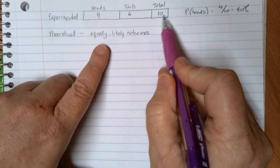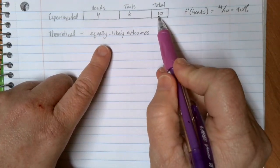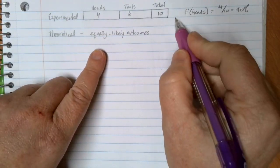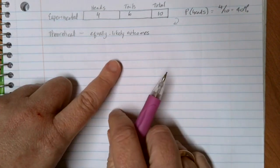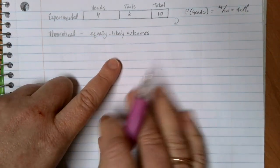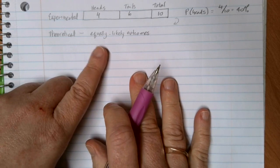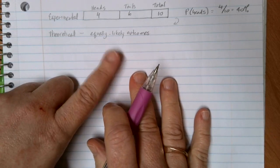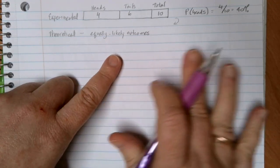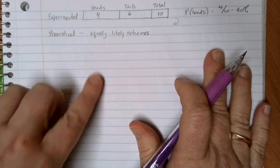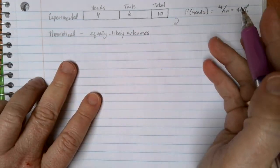The truth is, is that the more of these trials, the more of these experiments that you do, the closer and closer that you end up getting to this theoretical probability. And so if we're in a situation where we can actually track those equally likely outcomes, then we can come up with our best value for what that probability is going to be.